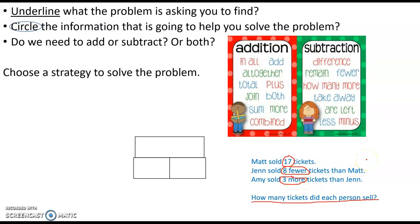I can tell by looking at this that this is a 2-step problem. I know this because I first need to figure out how many tickets Jen sold, and then I need to figure out how many tickets Amy sold. I can't figure out how many tickets Amy sold until I know how many Jen sold.